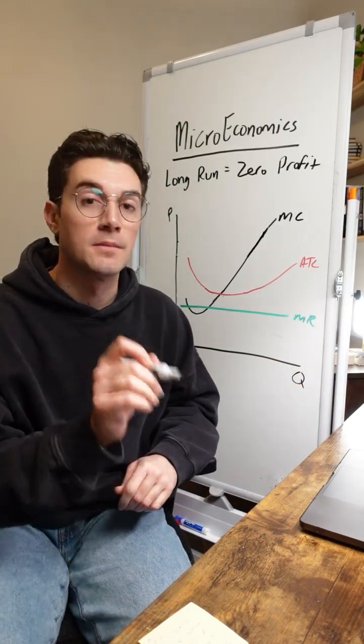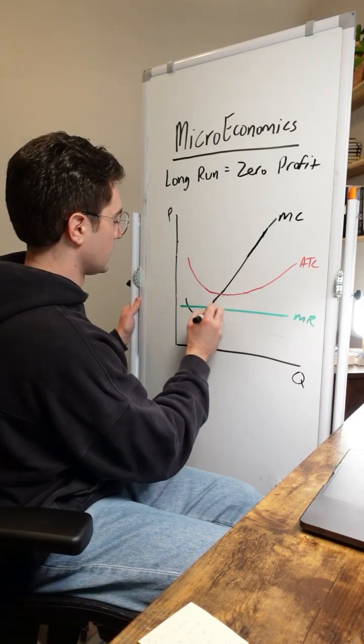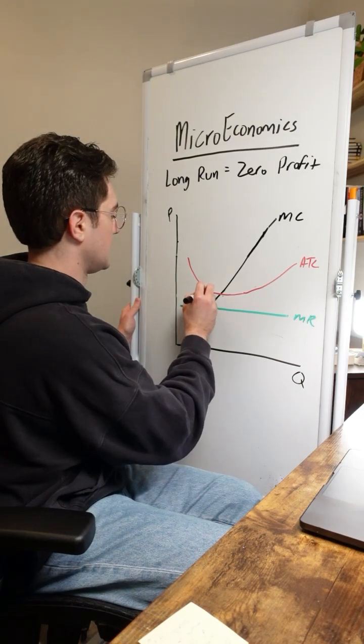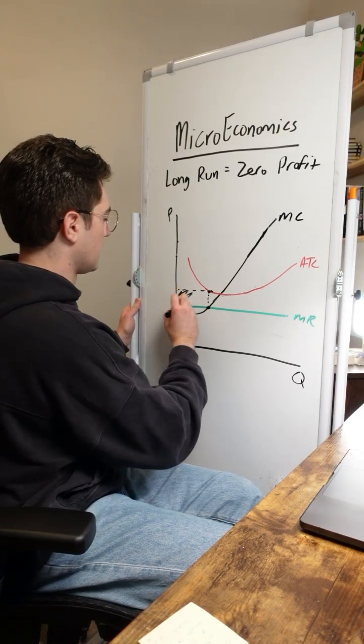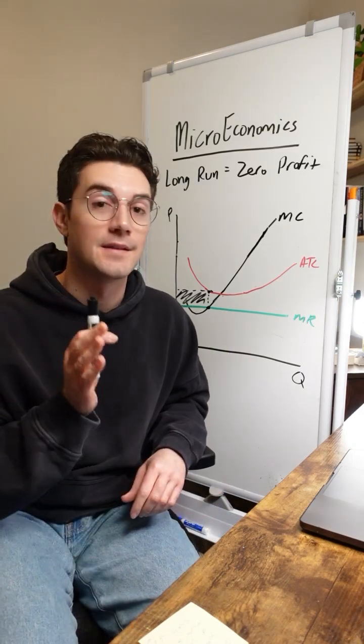The same thing goes for if a perfectly competitive firm is generating a loss in the short run, they're going to operate at the MC equals MR point. And when we go up, we can see that it's the ATC right here. So this rectangle right here is loss. This means that this firm is in the short run because they're not at zero profit.